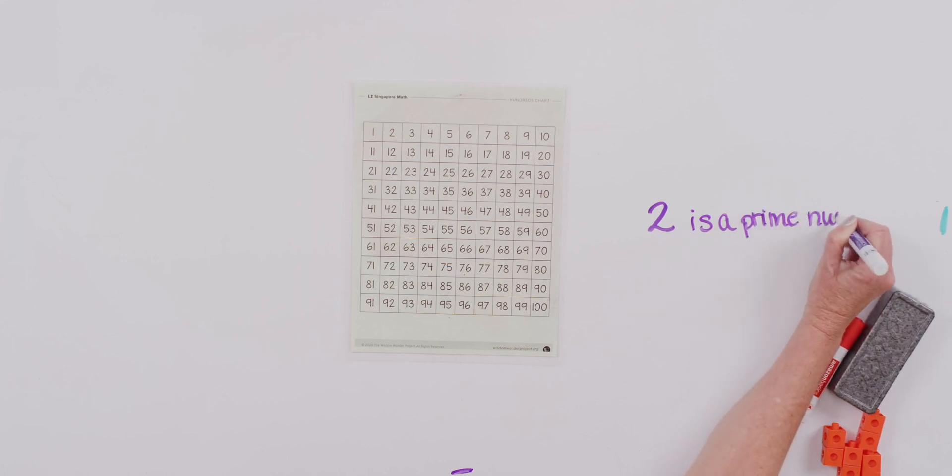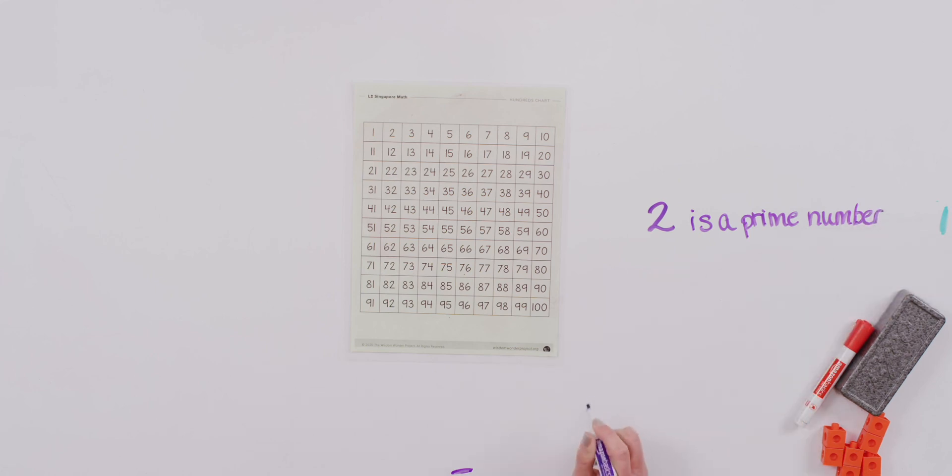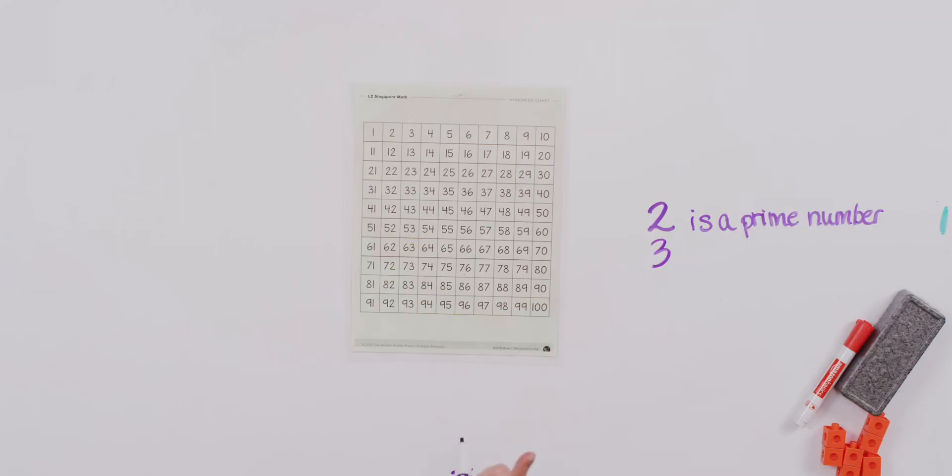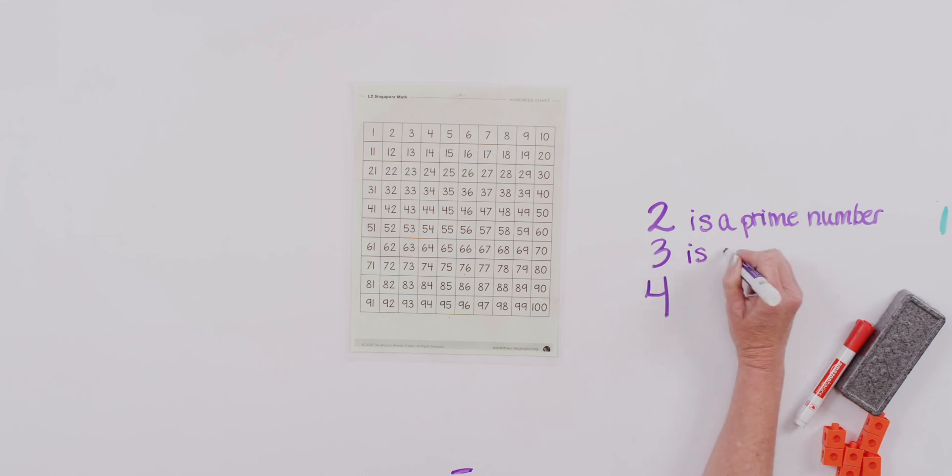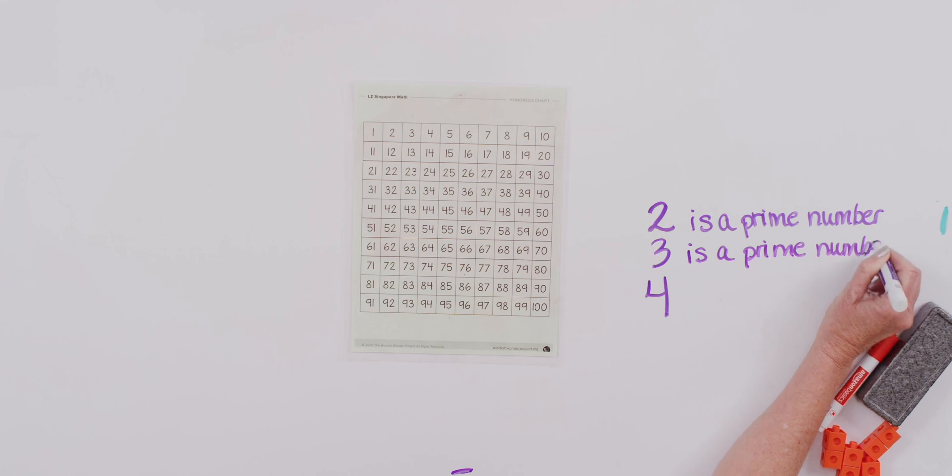How about the number 3? Could 3 be a prime number? Yes. 3 is a prime number also, because it only has two factors, 1 and 3. What about 4? 1 times 4 is 4. So 1 and 4 are factors of 4. Is there another factor? Yes, 2. We know that 2 times 2 is 4. Therefore, 4 is not a prime number. 3, we said is. 4 is not a prime number. What 4 is called is a composite number.